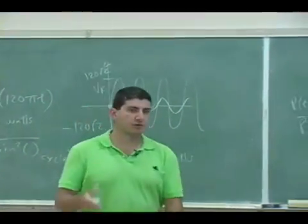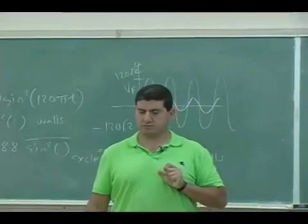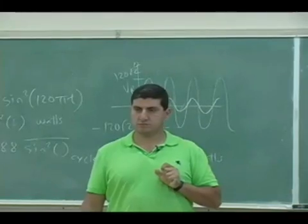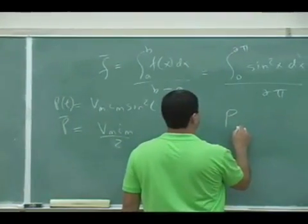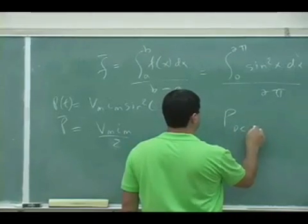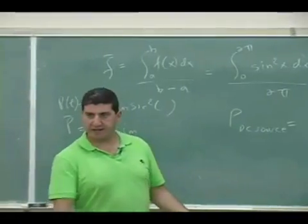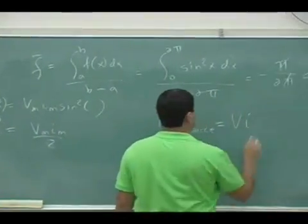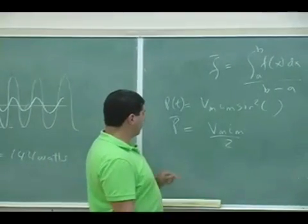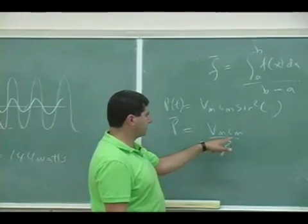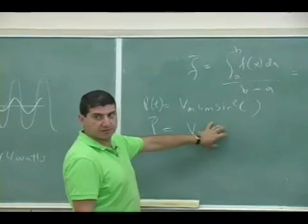Now, how could I rewrite that so that it looks like the DC equation? In the DC source, power in the DC source is just VI. How could I rewrite that so that this one looks like some voltage times some current?